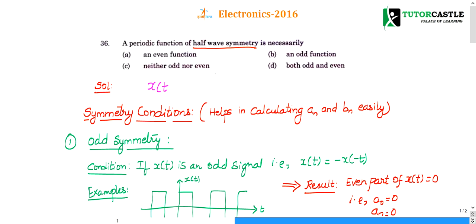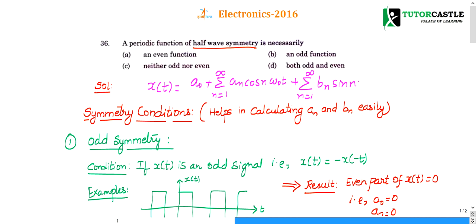So the Fourier series expansion is: x(t) = a0 + sigma (n=1 to infinity) an·cos(nω₀t) + sigma (n=1 to infinity) bn·sin(nω₀t). This is the Fourier series expansion. Here you have an, bn, and a0 — these are called Fourier series constants.